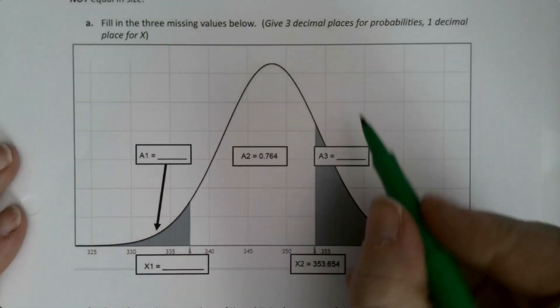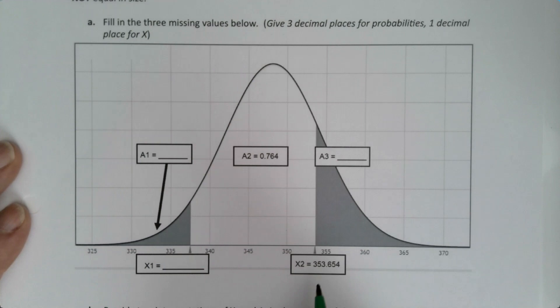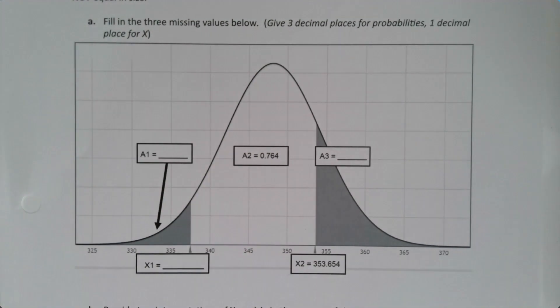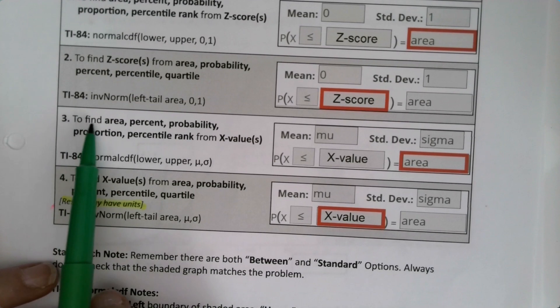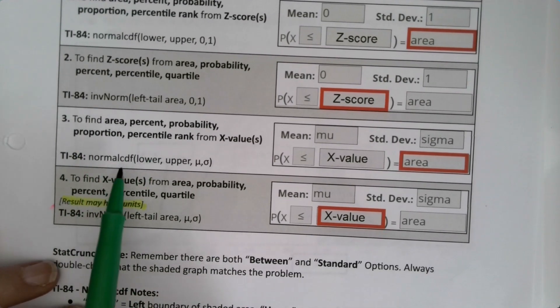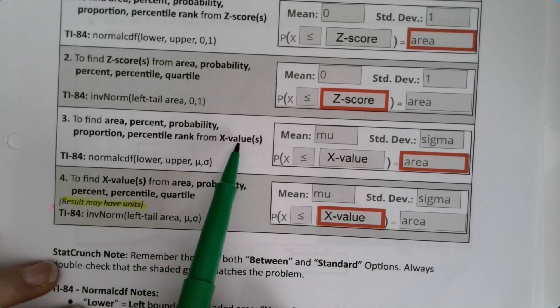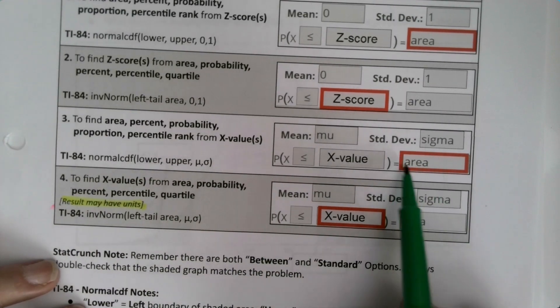So area three—well I want to find an area and I know an x value. So if I think back to my technology table here, I want to find an area and I know the x value from a known x value. So I'm looking for area. That's the one I'm looking for. That's in the one in the red box. So this is what I'm going to do.